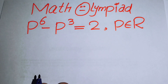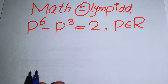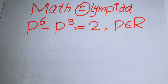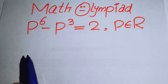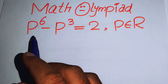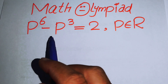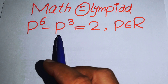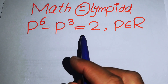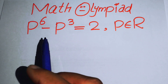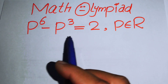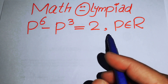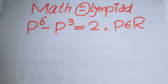Hello everyone, welcome back to the Map of Mathematics. In this video we are going to solve this nice algebra problem: p to the power of 6 minus p cubed equals 2, and we will solve this problem for the real values of p.